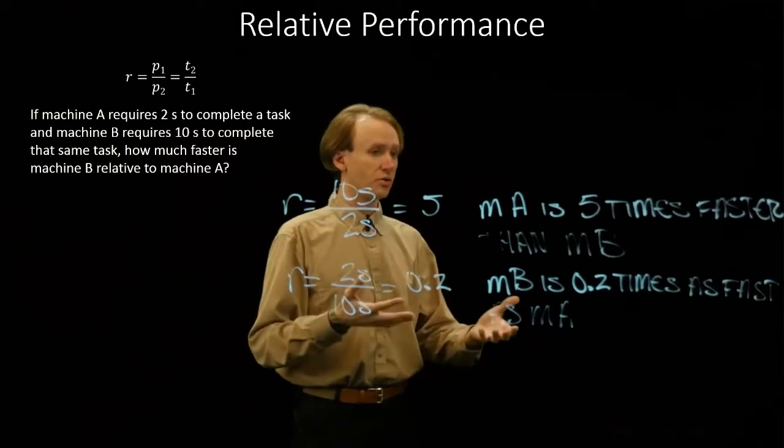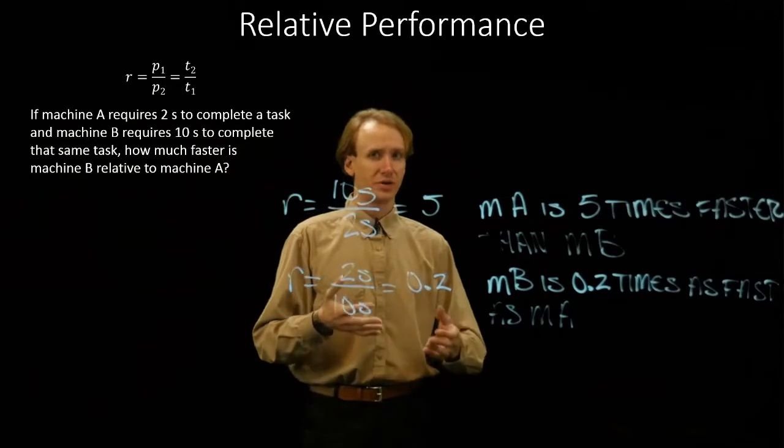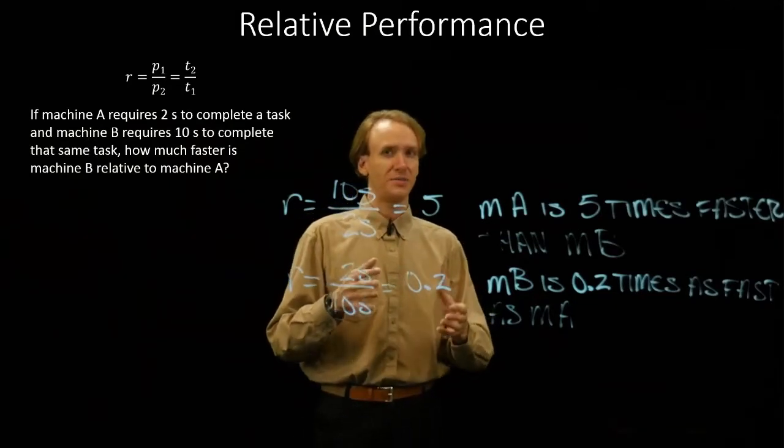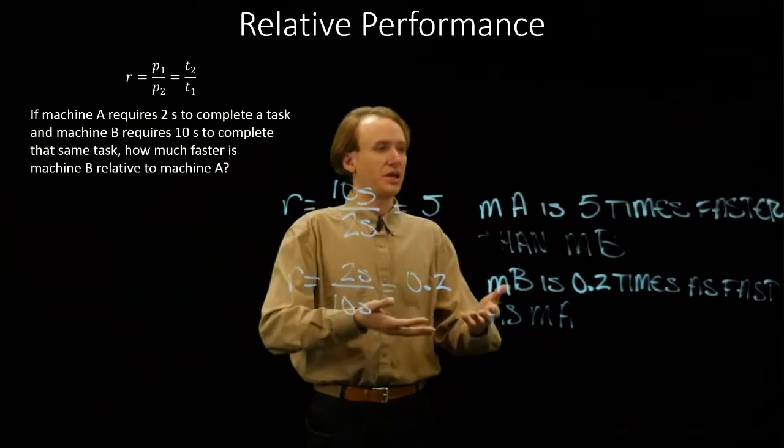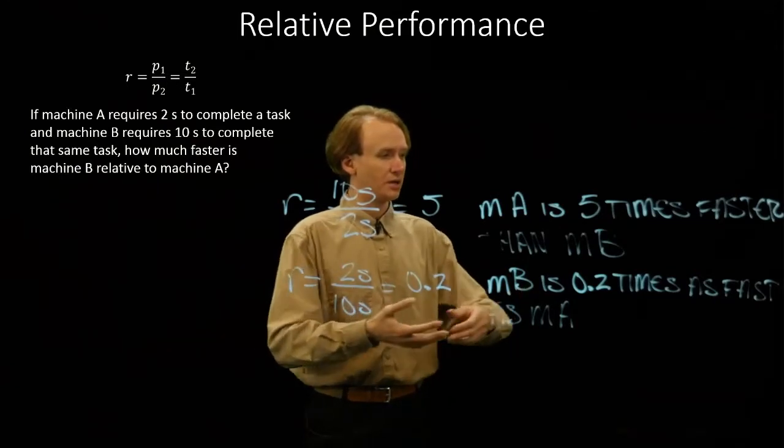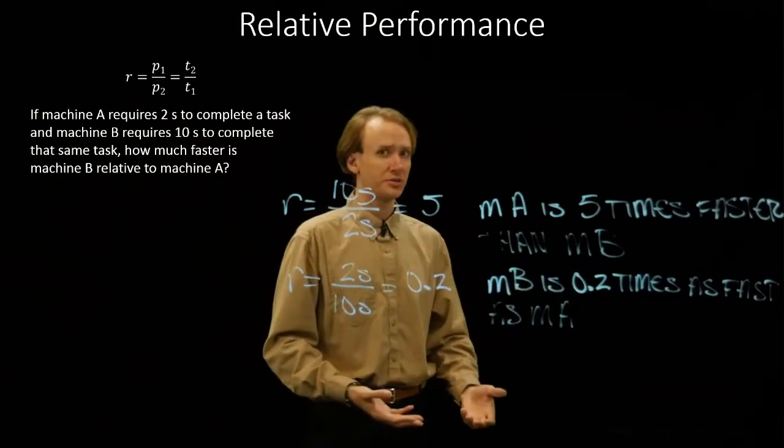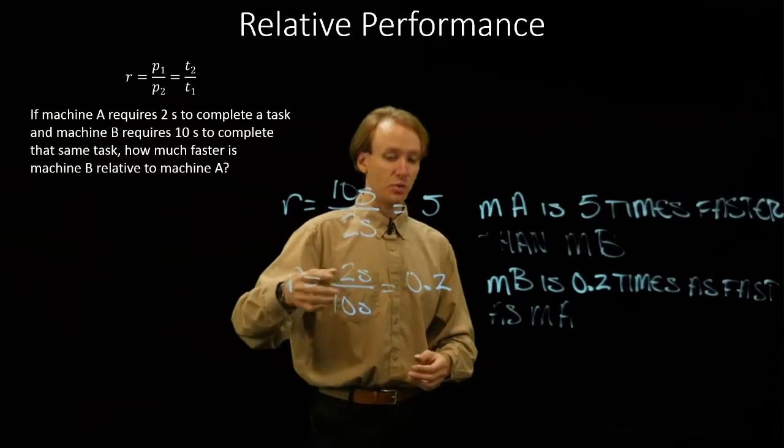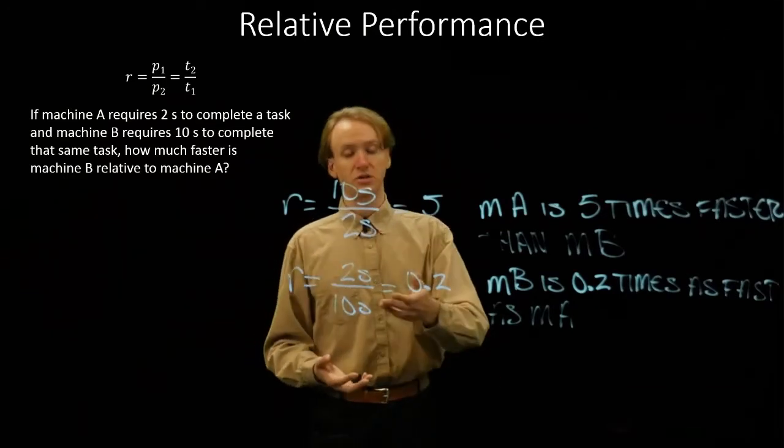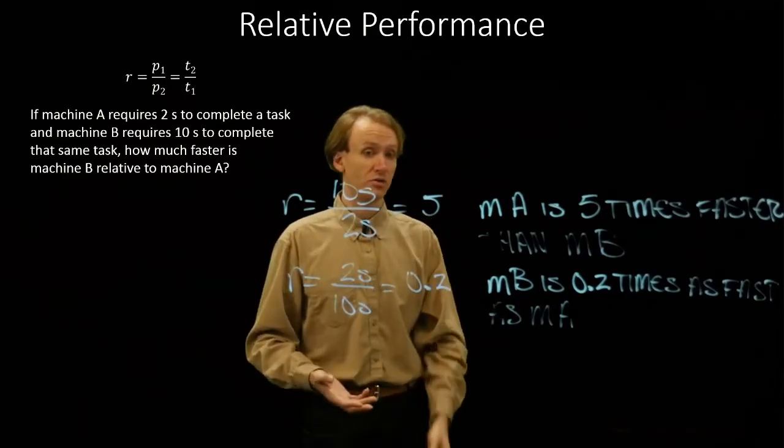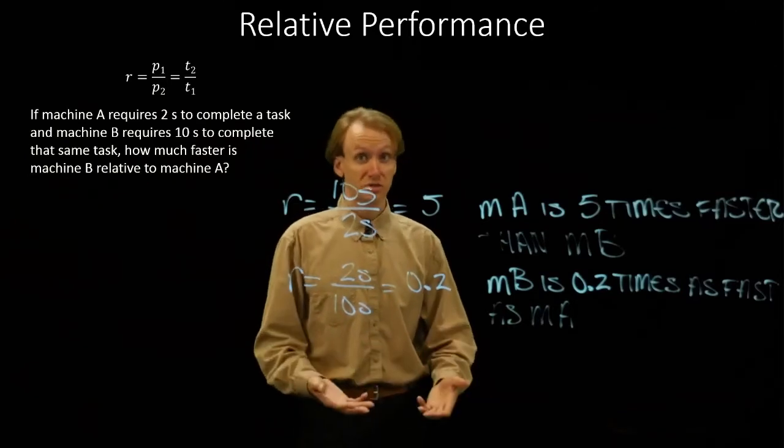So when you're doing one of these problems, if you get a result out that clearly does not make sense, machine A was clearly faster than machine B, and you got a number saying 0.2, it's obvious you have your equation inverted. You can really just go back and take the reciprocal of your result and get the correct result out.